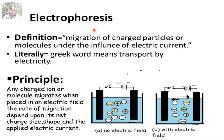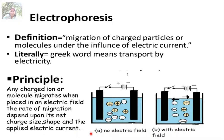The next technique is electrophoresis, which is based on the migration of charged particles in an electric current. Electrophoresis literally means transport by electricity. The principle is that any charged ion or molecule migrates when placed in an electric field. The rate of migration depends upon its net charge, size, shape, and the applied electric current.